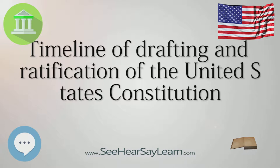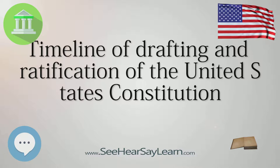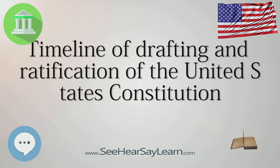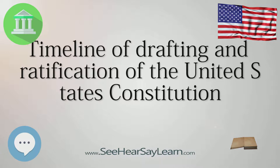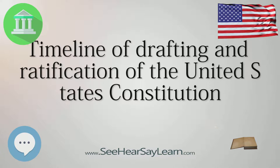Delegates approve a 13-point agreement, commonly known as the Mount Vernon Compact, regulating commerce, fishing, and navigation in the waters of the Potomac and Pocomoke rivers and Chesapeake Bay. The agreement was subsequently ratified by both the Virginia and Maryland General Assemblies, becoming the nation's first interstate compact.